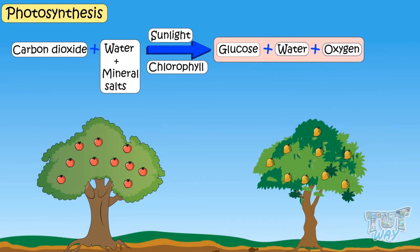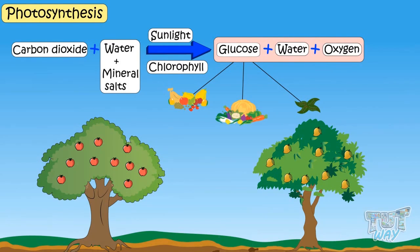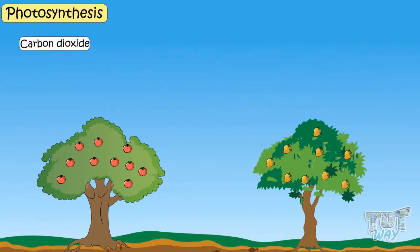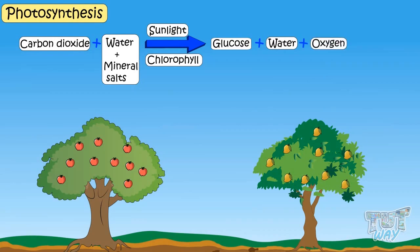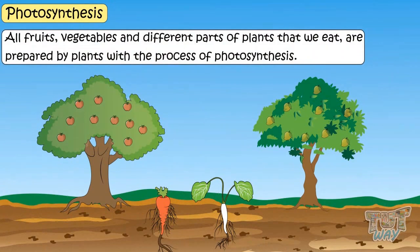This prepared food is stored in various forms — in the form of fruits, in the form of vegetables, and in the form of different parts of plants that we can eat. So in this process, plants use carbon dioxide, water, and minerals in the presence of sunlight and chlorophyll to make glucose, which is stored as edible parts of the plant, and also release some water in the form of water vapors and oxygen into the air. All fruits, vegetables, and different parts of the plant that we eat are prepared by plants through the process of photosynthesis.